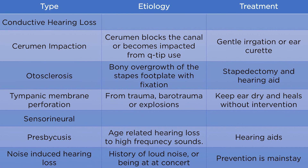There are two kinds of hearing loss you need to know: conductive and sensorineural. For conductive hearing loss: cerumen impaction occurs when cerumen blocks the canal or becomes impacted from Q-tip use — you shouldn't use Q-tips, and you should tell your patients not to either, because those fibers aggregate and impact the ear over time. Gentle irrigation or ear curette by someone who knows how to do it is the appropriate management. Otosclerosis is bony overgrowth of the stapes footplate with fixation — a stapedectomy and hearing aid are the appropriate treatments. Tympanic membrane perforation is usually from trauma, barotrauma, or explosions — you keep the ear dry and it heals over time.